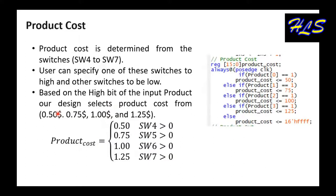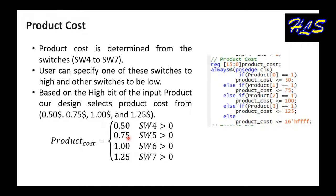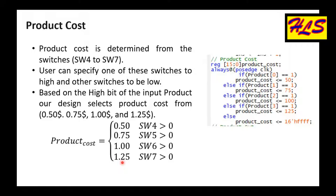Next is the product cost. We have four products: the first is 50 cents, the next is 75 cents, the next is 100 cents or $1.00, and the last is $1.25. These are the four products and we have this mechanism for the selection of the product.